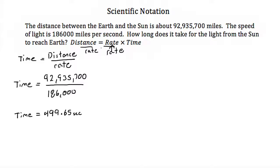But what if we had taken 92,935,700 and put it in scientific notation? Well, we would rewrite this as 9.29 to the 1, 2, 3, 4, 5, 6, 7th. So times 10 to the 7th power.